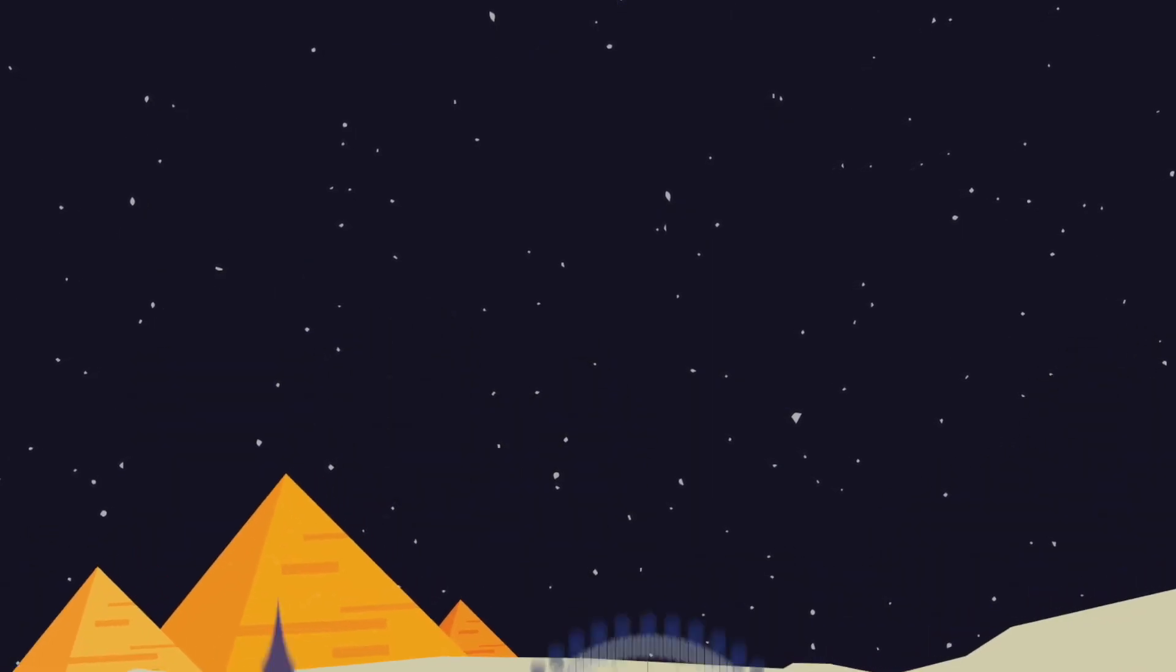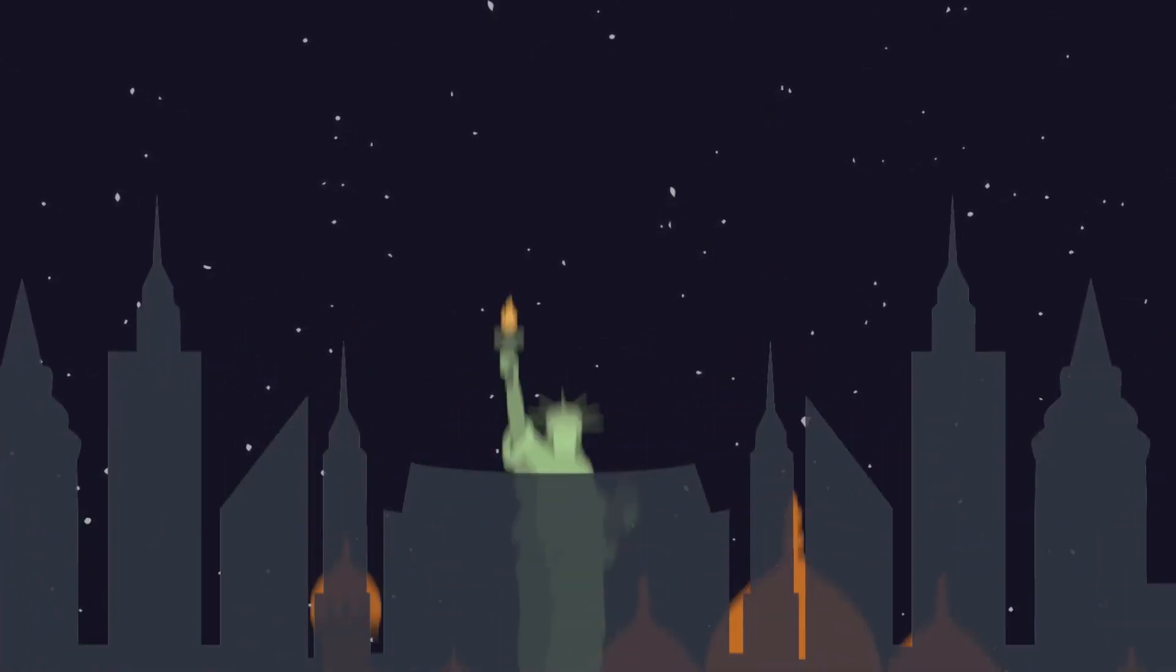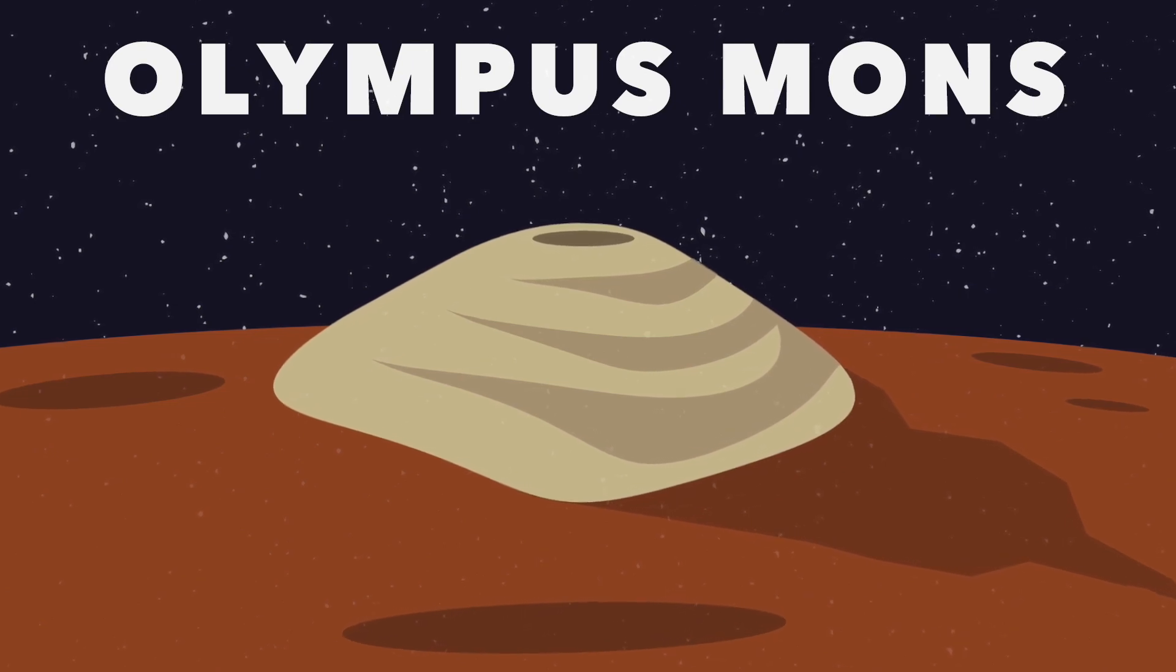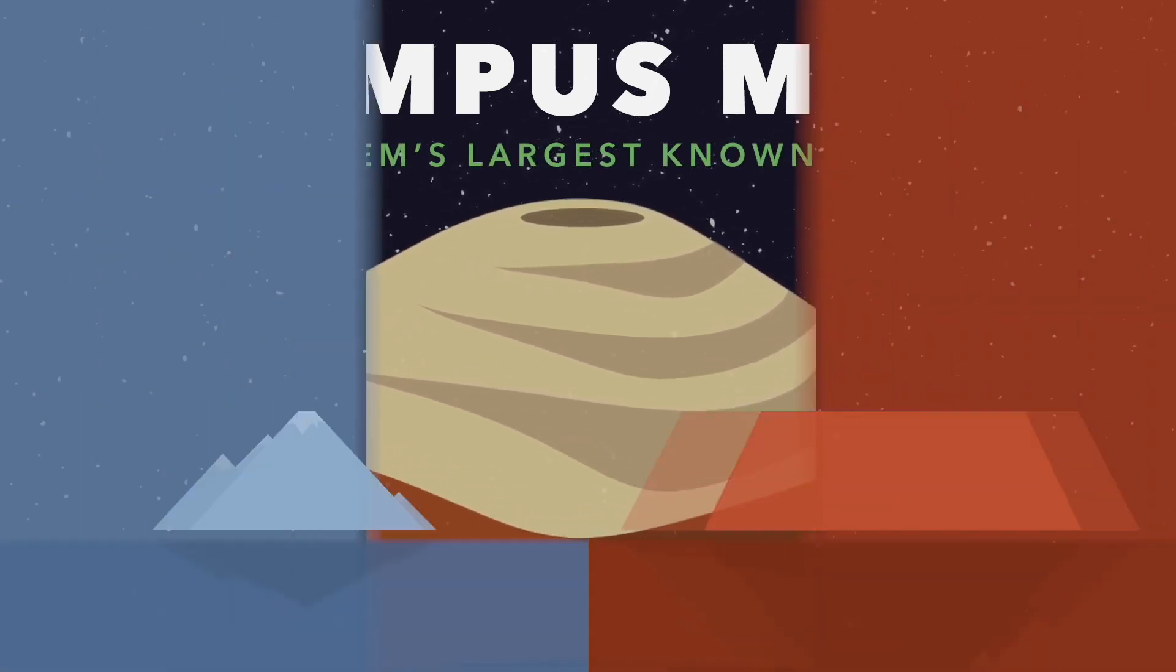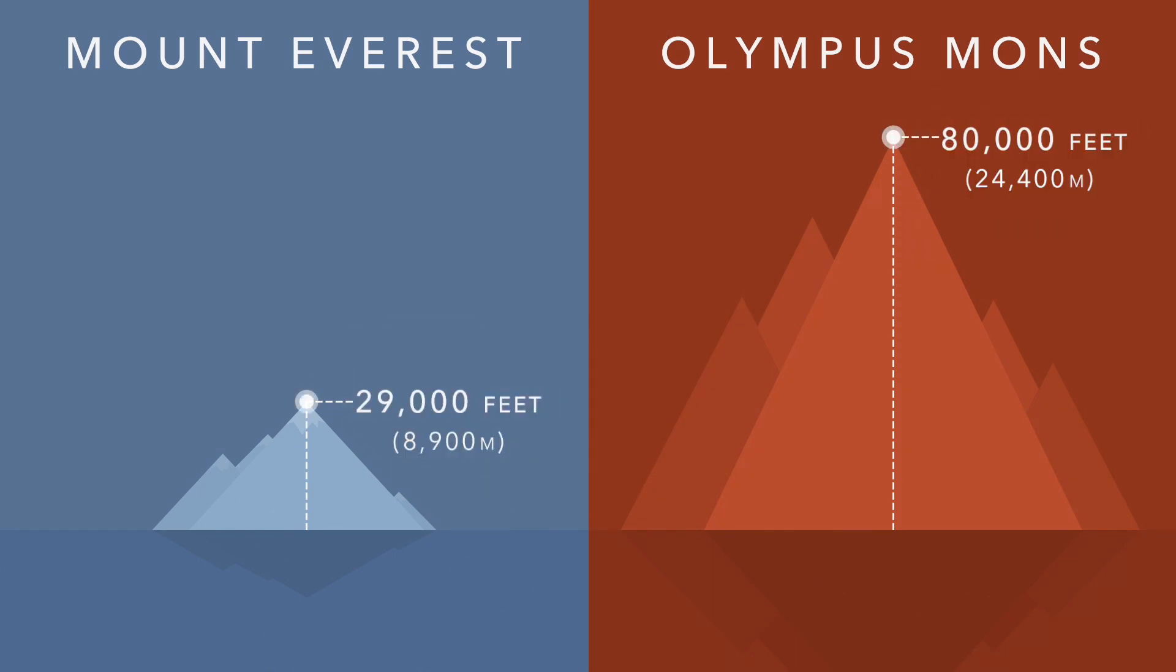And just like Earth, Mars does have its famous tourist attractions. They're just a lot bigger, like Olympus Mons, the solar system's tallest known mountain, or volcano to be exact. At an insane 80,000 feet high, it's three times as tall as Earth's Mount Everest.